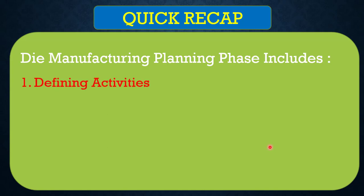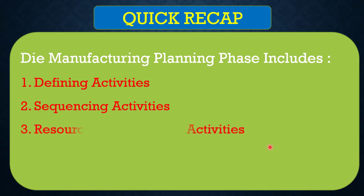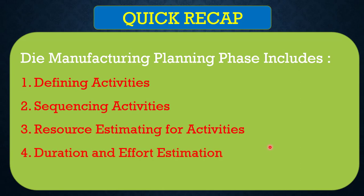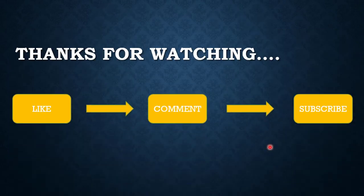Let's have a quick recap. Die manufacturing planning phase includes: number one, defining activities at the high level using WBS; number two, sequencing them step by step; number three, resource estimating for activities; number four, duration and effort estimation. If you have any different process, feel free to comment or send an email to automotivedieengineering@gmail.com.